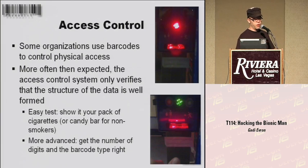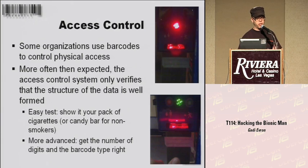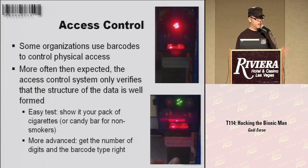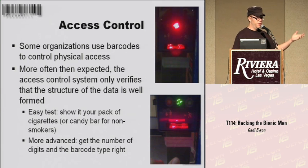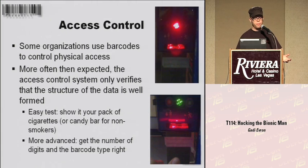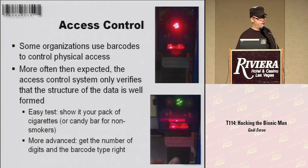Another thing people use barcodes for is access control. More often than you'd expect, the access control system only verifies that the structure of the data is valid — meaning it can read a barcode — without looking at the content at all. It's a really easy test: when you have an access system that uses barcodes, just take your pack of cigarettes or whatever you have with a barcode and scan it, and see if the door opens. Don't be too surprised if it does, because that's a really regular case. You can also just get the right number of digits on your barcode and scan it, and it will open the door.